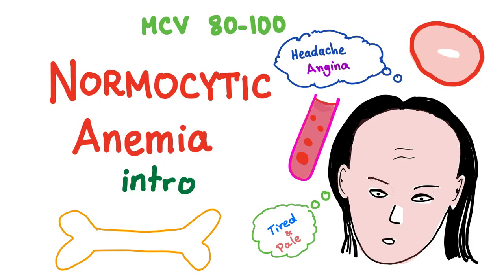Greetings! Today's topic is normocytic anemia. We have been talking about anemia since the beginning of history. In my playlist called Hematology Oncology, there are around 30 videos so far — this is a series supposed to be watched in order, so please watch the previous videos. We have talked about microcytic first, then macrocytic, and the last type is normocytic anemia.